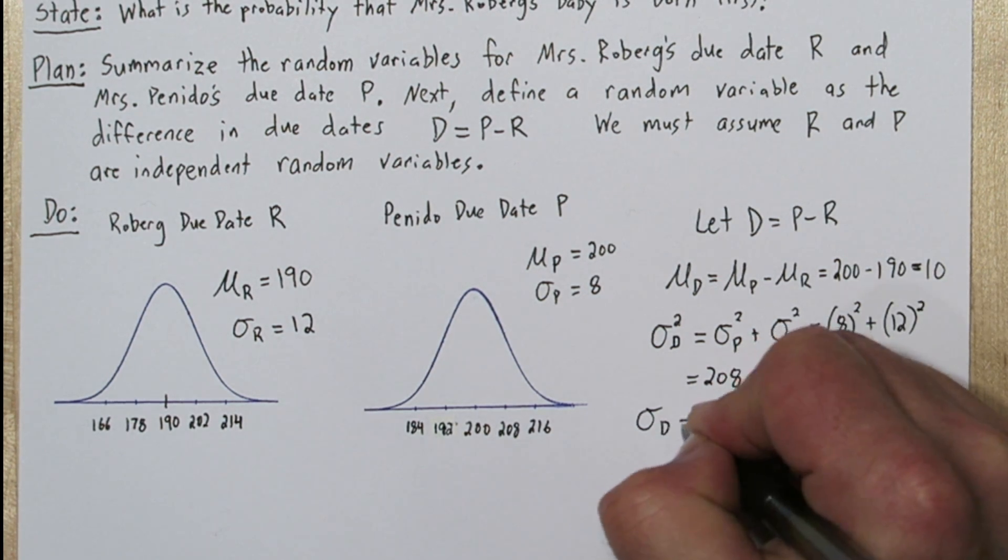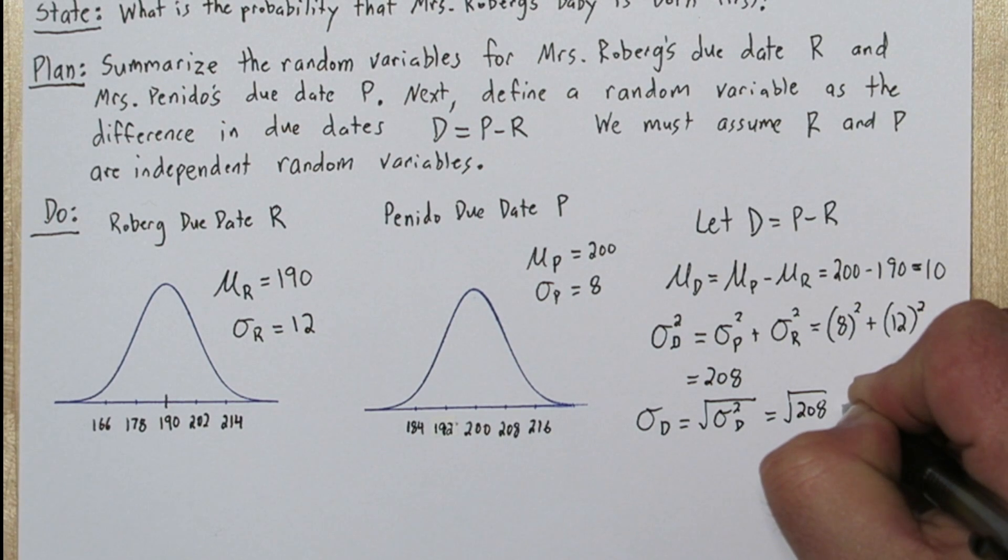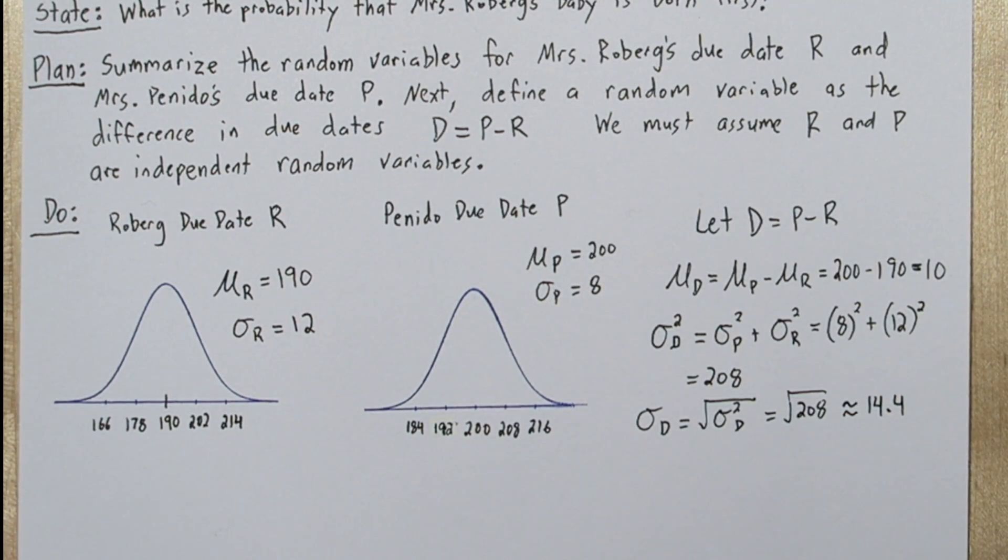So if the variance is 208, we can just take the square root and find out the standard deviation of our difference in due dates is approximately 14.4.